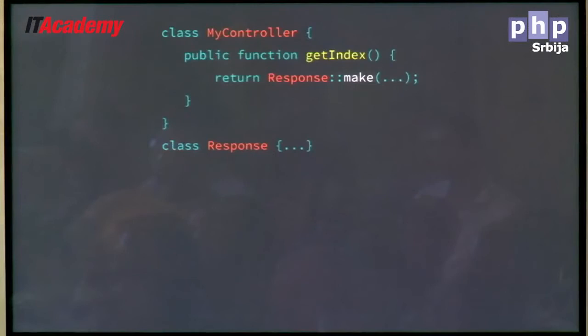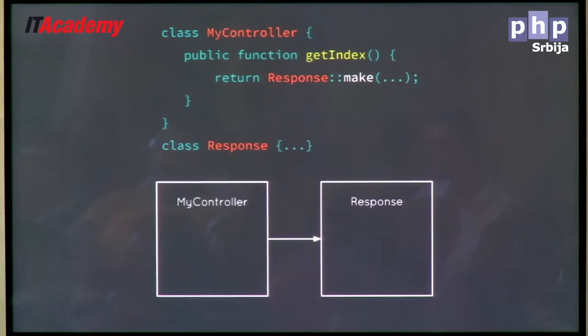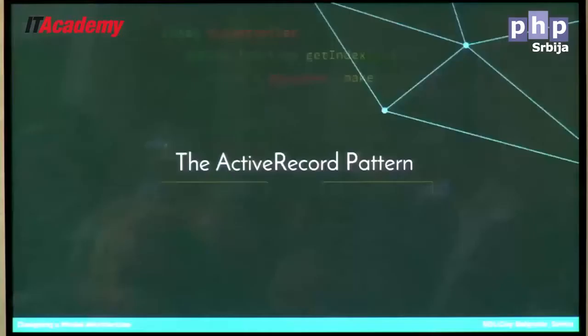My trait can be used all over the place by any number of classes and it doesn't have to have knowledge about what is consuming it. In this example, we have my controller and it knows about the class response. We can draw an arrow from my controller to response to show that the knowledge flows in one direction. My controller knows about response, it can use and consume it, and response knows nothing about my controller. Response is more or less an HTTP concept, and it's kind of ridiculous to have this generic concept know about some specific implementation of a controller.